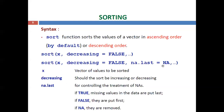The na.last parameter controls the treatment of NA (not available) values. There are three cases: if na.last = TRUE, missing values are placed at the end; if na.last = FALSE, missing values are placed at the beginning; if na.last = NA, missing values are removed entirely. These are the three possible values for na.last in the sort function.